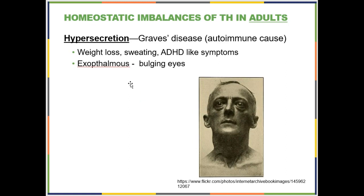In adults, too much thyroid hormone leads to Graves disease, an autoimmune disease. Here it's just the opposite: your metabolism speeds up, so you get weight loss and sweating. It also affects mental function — instead of sluggishness, it is a bit like ADHD; your mind is racing because your metabolism has sped up. You also get bulging eyes, a condition called exophthalmos.